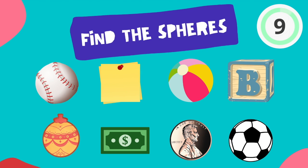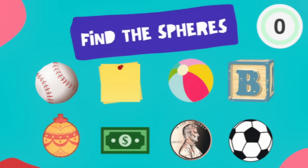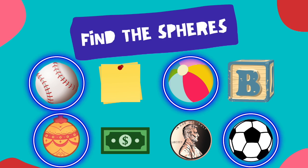Now that you know what a sphere looks like, can you find all the spheres in this picture? The baseball, ornament, beach ball, and soccer ball are all spheres. Hopefully you didn't get tricked by the penny. The penny is a circle because it's flat. Remember, spheres are solid.